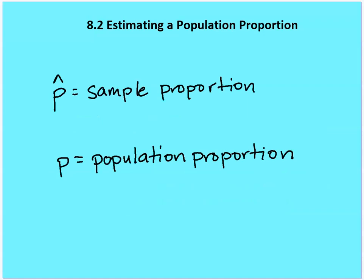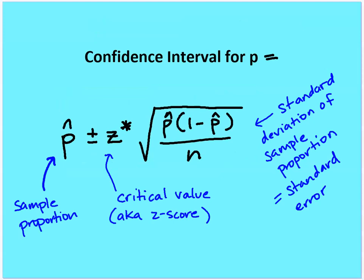Going back to the discussion we had on proportion and how we designate that mathematically or symbolically: P hat is going to be the sample proportion, and P without the hat is going to be the population proportion. We're going to set up a confidence interval for P, our population proportion, by taking the sample proportion plus or minus the margin of error. For the margin of error, we use a critical z-score times the standard error, which is the square root of P hat times (1 minus P hat) over n.